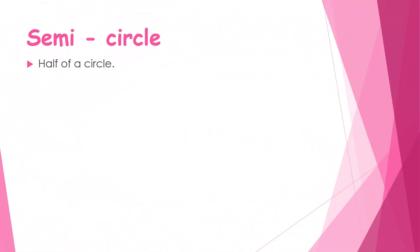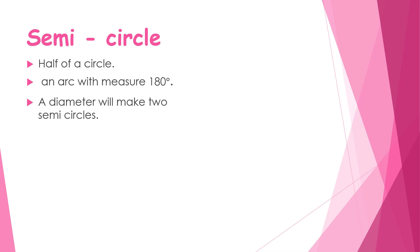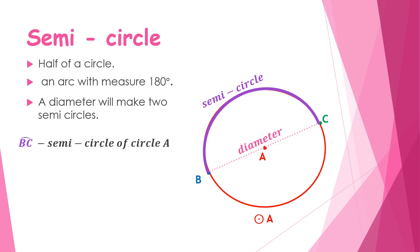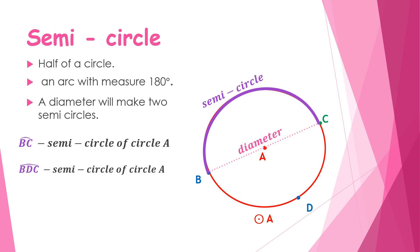A semicircle is half of a circle — an arc with a measure of 180 degrees. A diameter divides a circle into two semicircles. On Circle A with diameter BC, the upper portion is one semicircle: arc BC. To name the lower semicircle differently, we use a point D on it, calling it arc BDC — the other semicircle of Circle A.